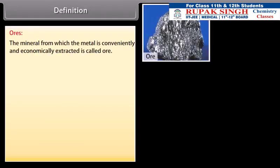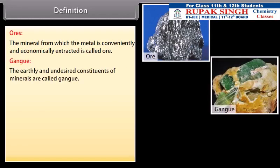Definition. Ores: The mineral from which the metal is conveniently and economically extracted is called ore. Gang: The earthly and undesired constituents of minerals are called gang.